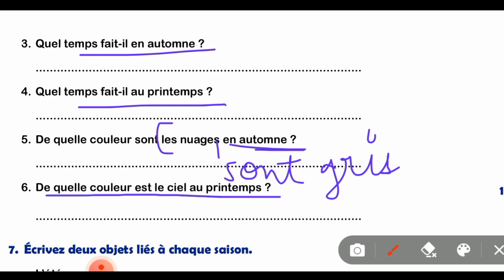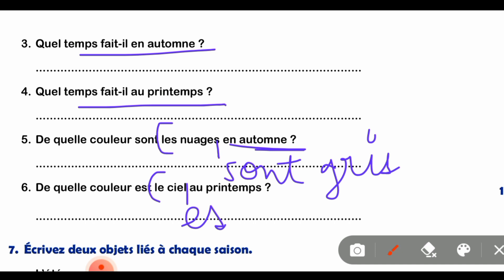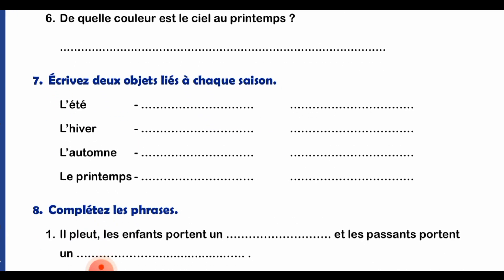For the color of clouds in autumn - 'les nuages sont gris en automne'. So you write 'Les nuages sont gris en automne'. And the color of the sky in spring - 'le ciel est bleu au printemps' with a question mark and full stop. These are the answers for the weather and color questions.